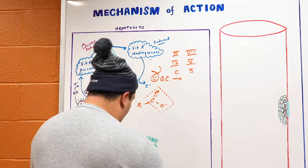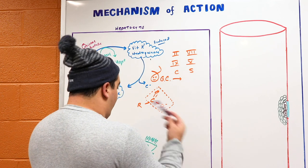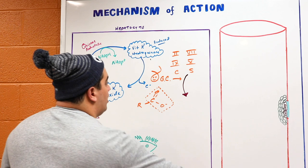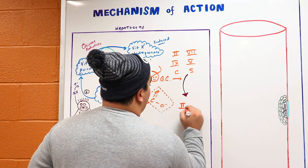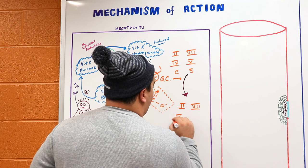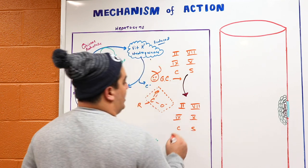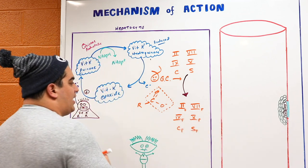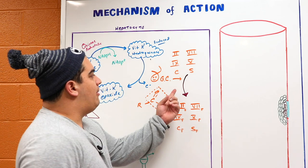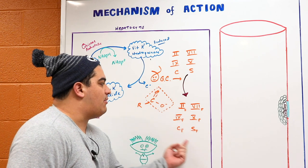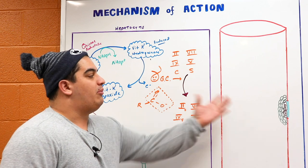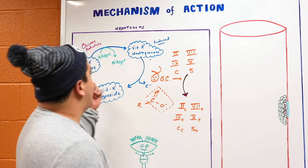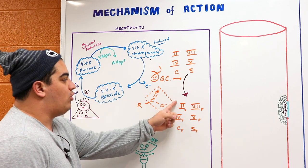These factors get carboxylated and converted into a functional form — functional Factor 2, 7, 9, 10, Protein C, and Protein S. It doesn't mean they're activated yet; they get activated in the coagulation cascade. Without gamma glutamyl carboxylase adding this carboxyl group, they wouldn't be properly functional and wouldn't be able to do their job when activated. This is the mechanism for synthesizing and functionalizing these clotting proteins.